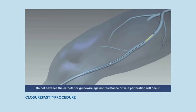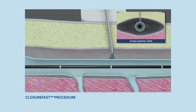Again under ultrasound guidance, paravenous tumescent anesthesia or saline is then delivered to the saphenous compartment surrounding the targeted vein segment.